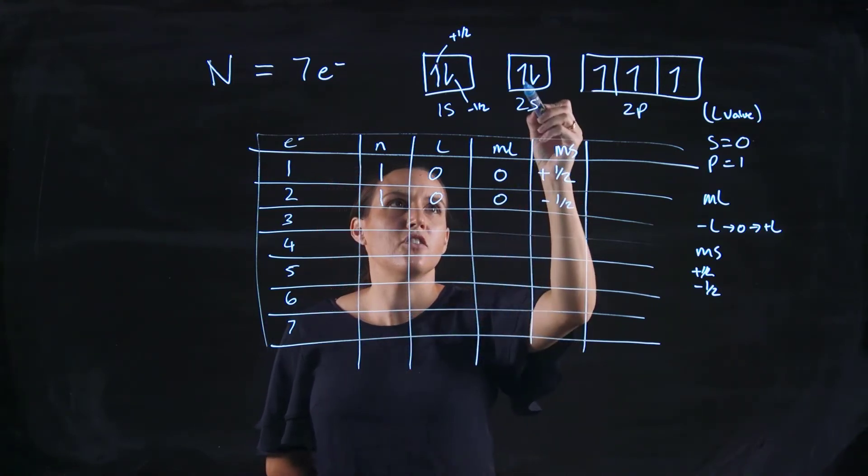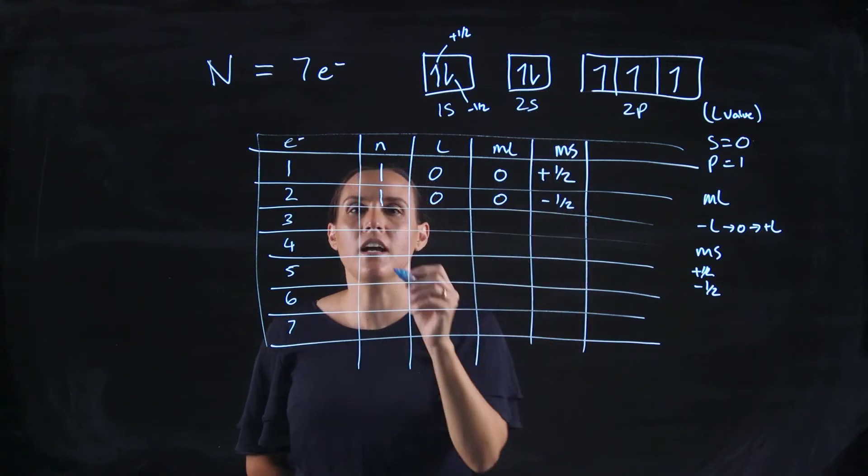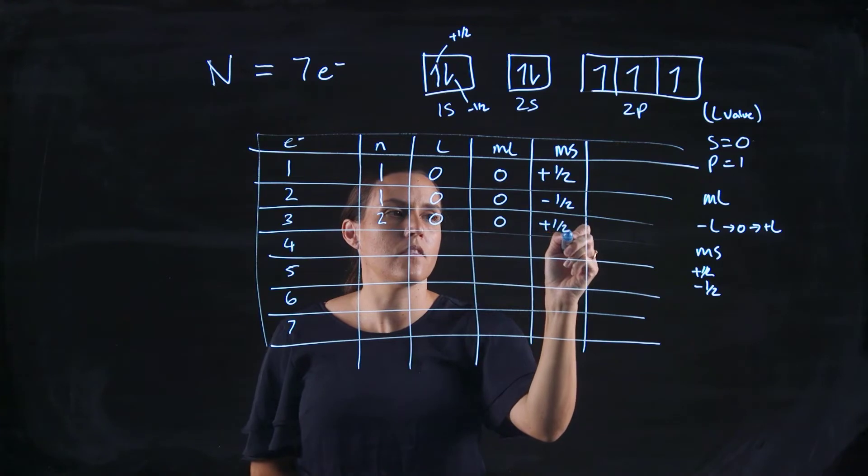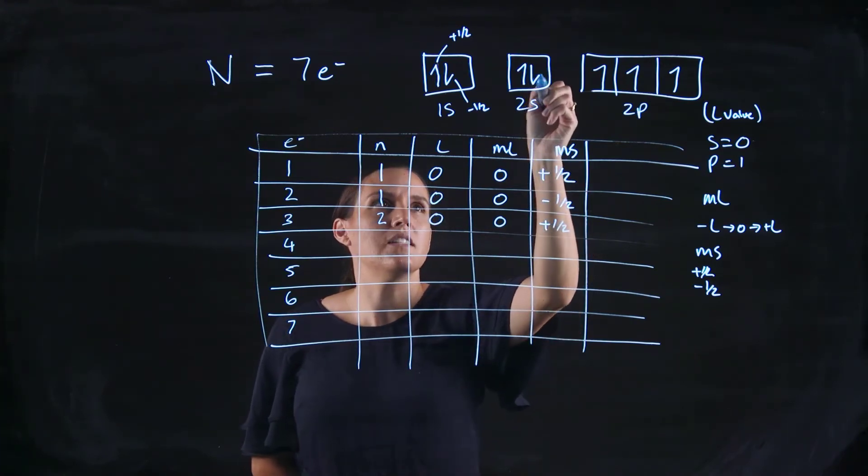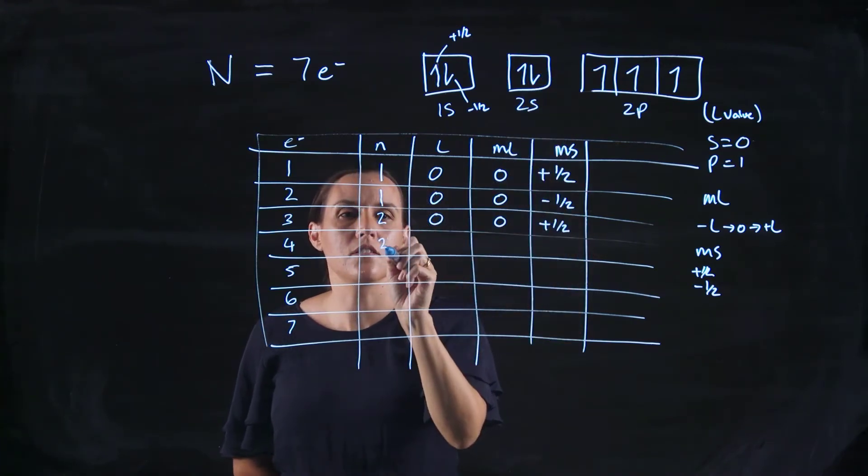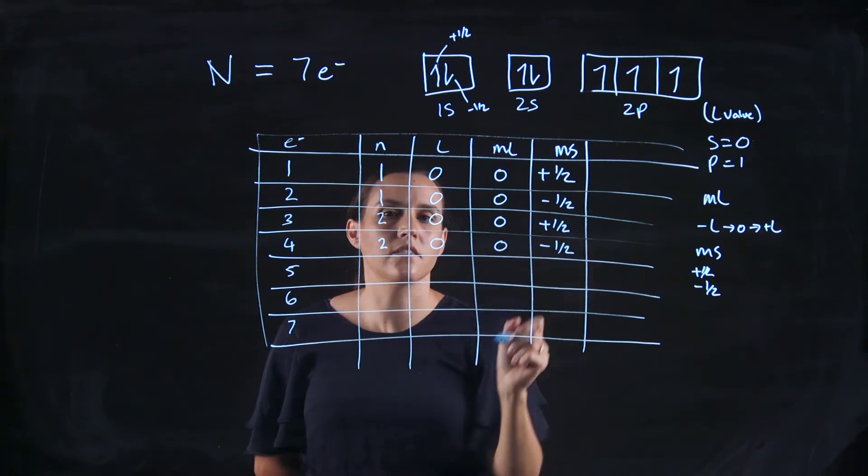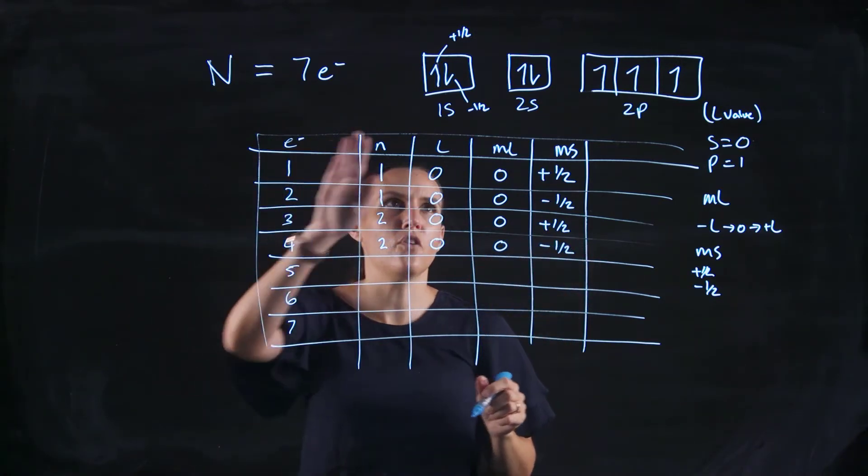Our third electron is this 2s going up. So it's 2, still in that s orbital, and we've got it going up. Our next one is our 2s going down. So still 2, 0, 0, and now it's going down. So the first four are fairly easy.